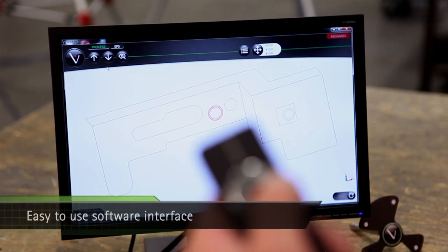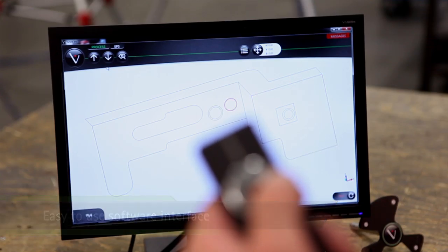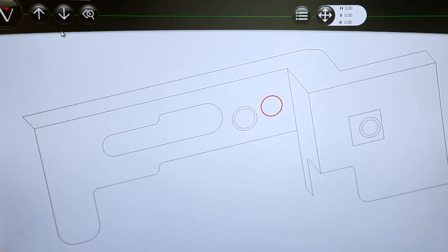Workers operate the IRIS SPS through an easy-to-use software interface, making it possible for someone with only a few minutes of training to use it successfully.